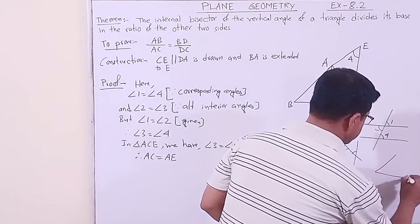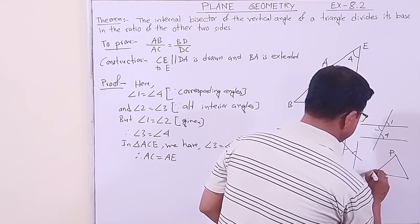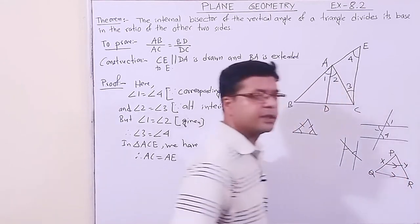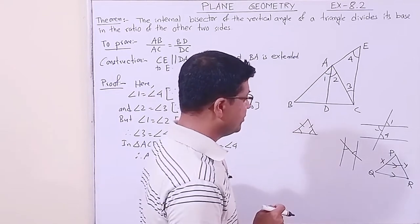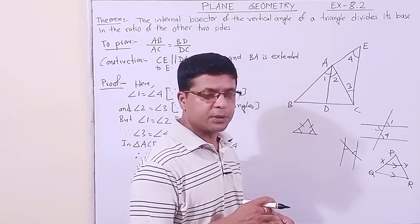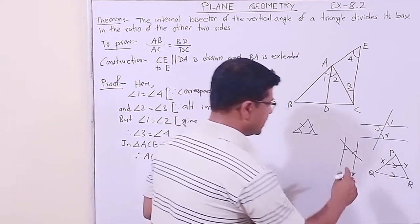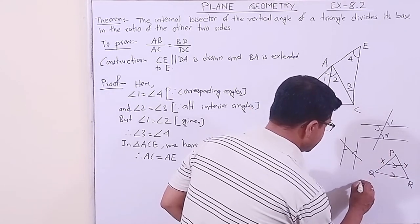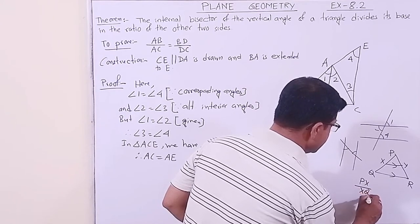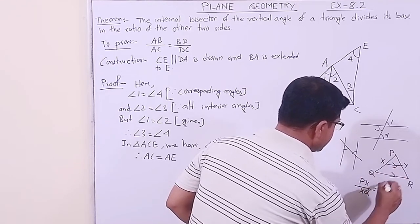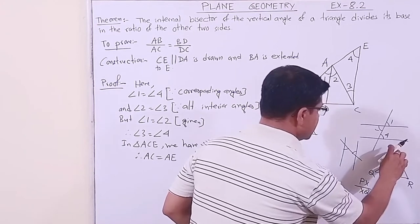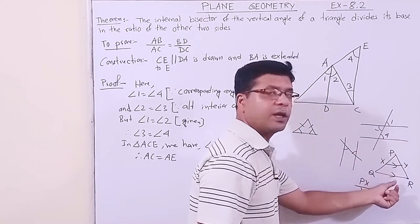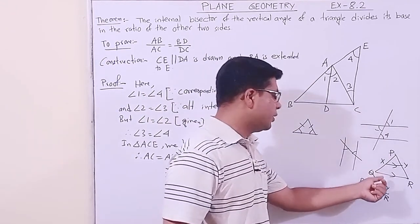Now the main part: recall the Basic Proportionality Theorem (BPT), also called Thales' theorem. If in triangle PQR a line XY is parallel to the base, then PX by XQ equals PY by YR — upper part by lower part equals upper part by lower part, provided the two lines are parallel.